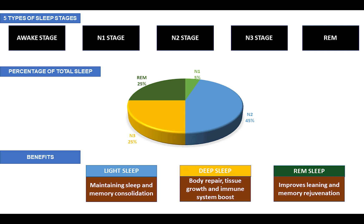The fourth stage is N3, which is the deepest form of sleep and accounts for 25 percent of total sleep. EEG recordings show it is characterized by low-frequency delta waves where the muscle is totally relaxed, breathing is regular, and heart rate is slowed. It is in this stage that the body undergoes repairs, builds muscles and bones, and strengthens the immune system. It is also the stage where bedwetting and sleepwalking occur.